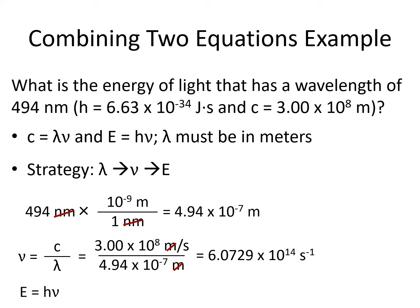Our second equation, E equals hν, is already in the form we need since we are solving for energy and it is already by itself on one side of the equals sign. We plug in Planck's constant for h and our calculated frequency for ν and come out with 4.03 times 10 to the minus 19 joules.